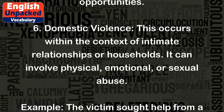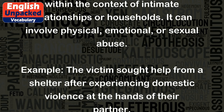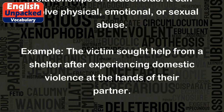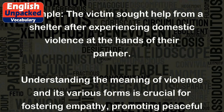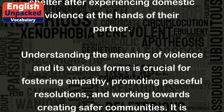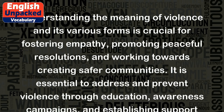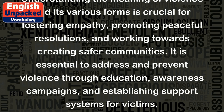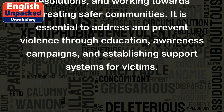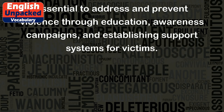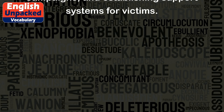6. Domestic violence: This occurs within the context of intimate relationships or households. It can involve physical, emotional, or sexual abuse. Example: The victim sought help from a shelter after experiencing domestic violence at the hands of their partner. Understanding the meaning of violence and its various forms is crucial for fostering empathy, promoting peaceful resolutions, and working towards creating safer communities. It is essential to address and prevent violence through education, awareness campaigns, and establishing support systems for victims.